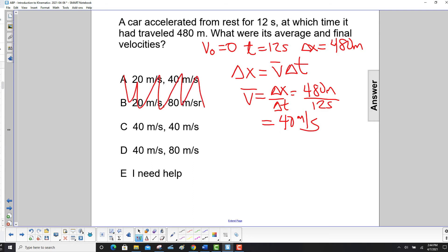Now we need the final velocity. So we have this equation, average velocity is final plus initial over 2. Our initial velocity is zero, so this term goes away, and our final velocity is 2 times the average velocity, so that's 2 times 40 meters per second, and we get 80 meters per second.